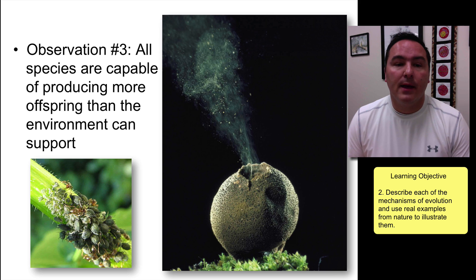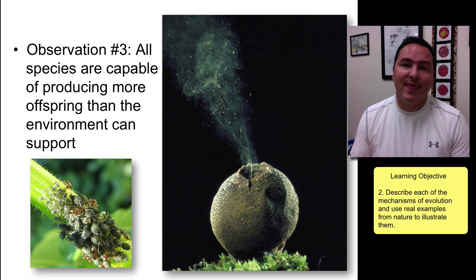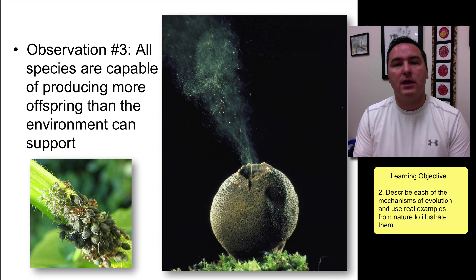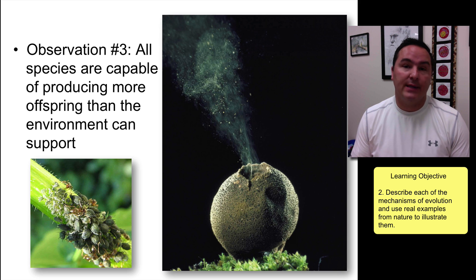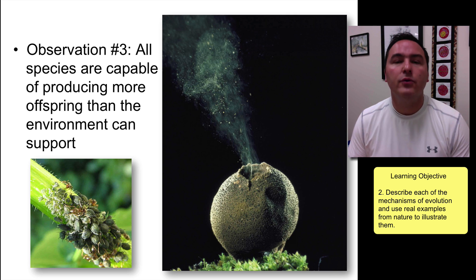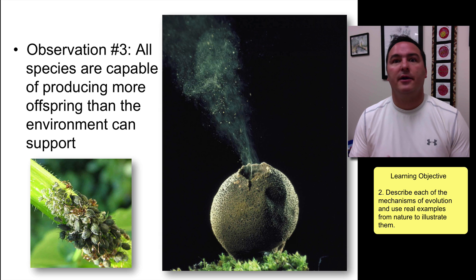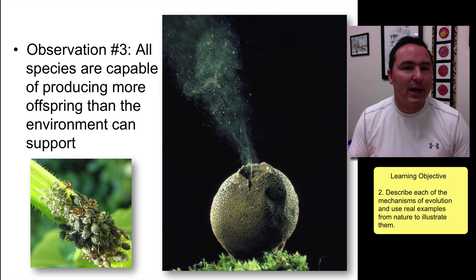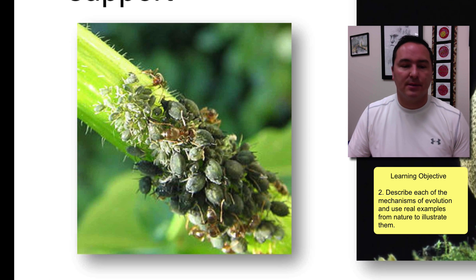Number three: the third observation was that species, when they reproduce, produce more offspring than the current environment can support. There's just not enough resources — not enough food, not enough space, not enough places to put waste. This is true for any organism, whether we're talking about elephants or something like aphids.